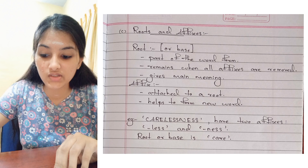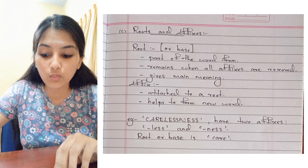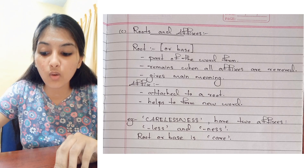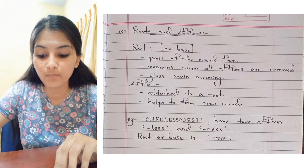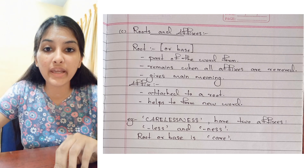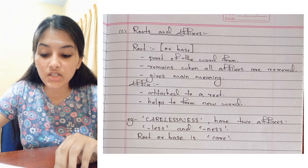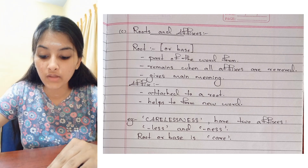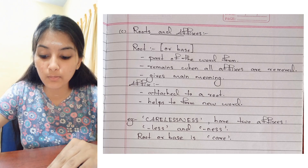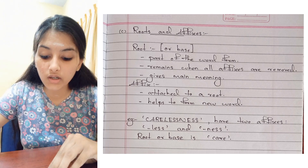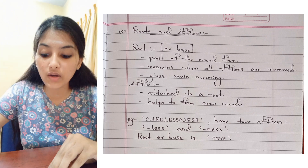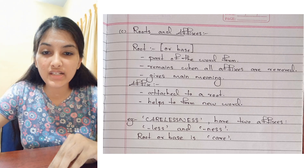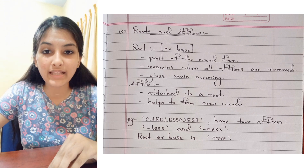Roots and affixes. Root is also known as base. Root is the part of the word form that remains when all affixes are removed; it gives the word its main meaning. An affix is a word element attached to a root or base in order to form a new word. For example, the word 'carelessness' has two affixes: 'less' and 'ness', attached to the root or base morpheme 'care'.